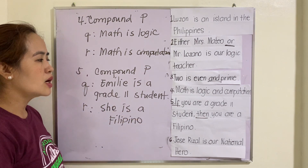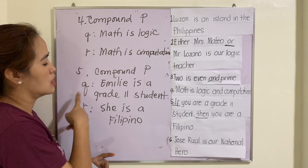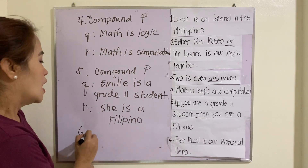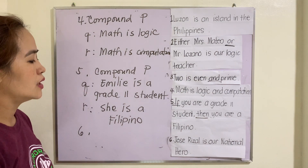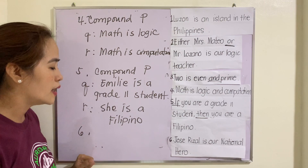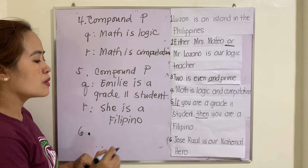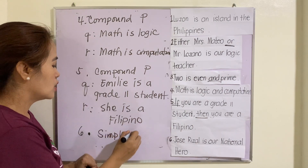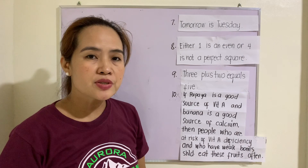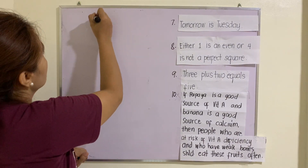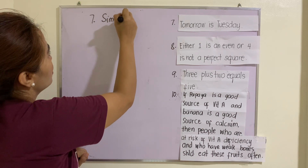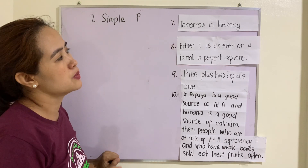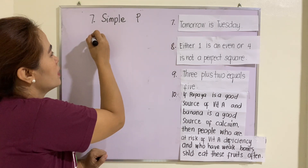Number six: 'Jose Rizal is our national hero.' There is only one simple subject and one simple predicate, therefore this one is a simple proposition. Number seven: 'Tomorrow is Tuesday.' This one is also a simple proposition because we cannot see any connector and there is only one simple subject and one simple predicate.